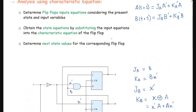Now we move to the second step: obtain the state equations by substituting the input equations into the characteristic equations of the flip-flops. We take these input equation values and substitute them into the characteristic equation.